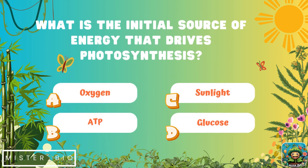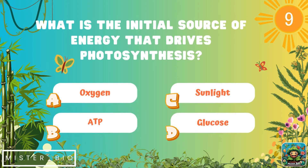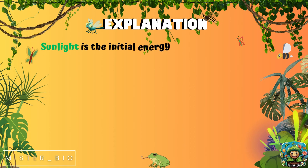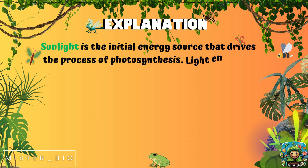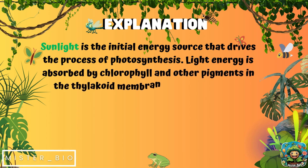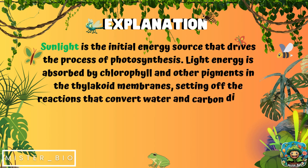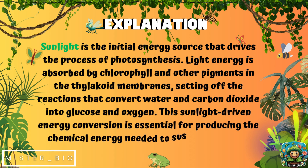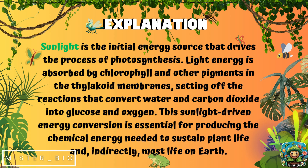What is the initial source of energy that drives photosynthesis? A) oxygen, B) ATP, C) sunlight, or D) glucose. The correct answer is C, sunlight. Sunlight is the initial energy source that drives the process of photosynthesis, generating ATP and converting carbon dioxide into glucose and oxygen. This sunlight-driven energy conversion is essential for producing the chemical energy needed to sustain plant life.